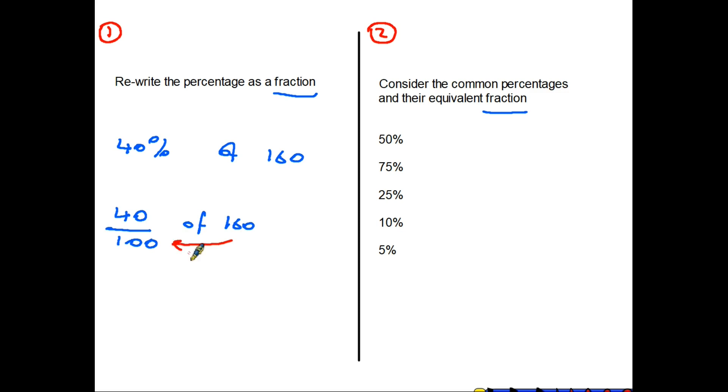160 divided by 100, take your answer and multiply by 40. So 160, let's do it - divided by 100 is 1.6, times 40 equals 64.